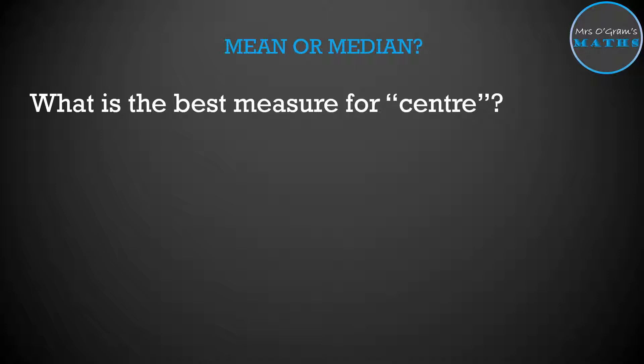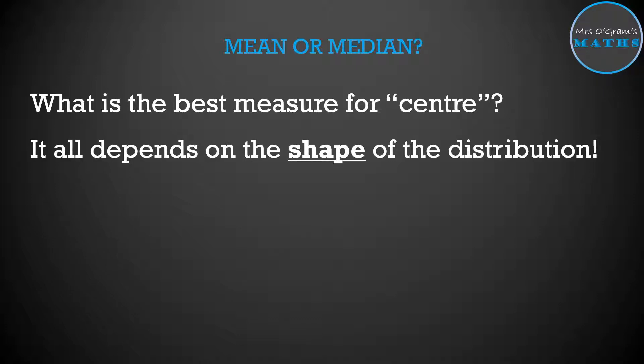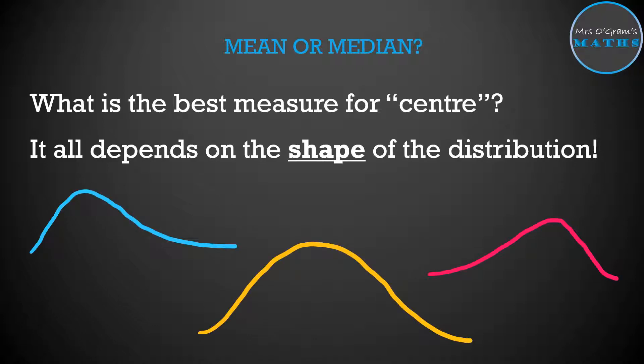We're never going to use mode, but we're choosing between mean or median. When is that the best one to use? This is all dependent on the shape of the distribution. We're assuming it's probably going to go something towards a normal distribution for most things that we're looking at, but we need to know whether or not it is symmetrical.